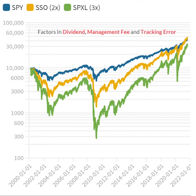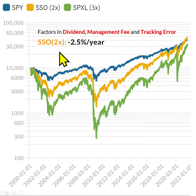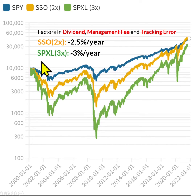This simulation factors in the dividend, management fee, and tracking error. SPY has dividends. SSO and SPXL have about 1% management fee each year, and the leveraged ETFs also have tracking errors. SSO has minus 2.5% annual decay due to tracking error and management fee, while SPXL has minus 3% each year.